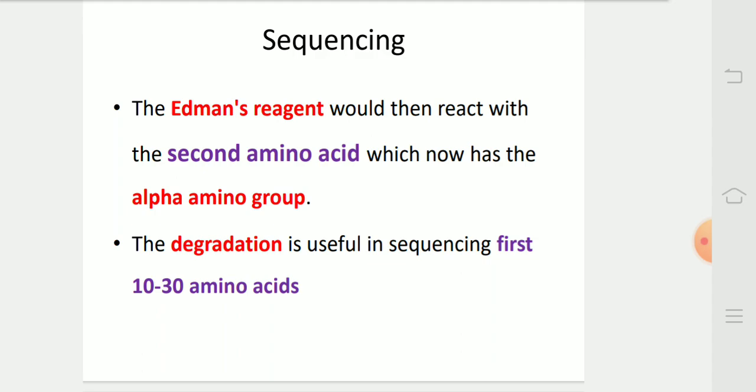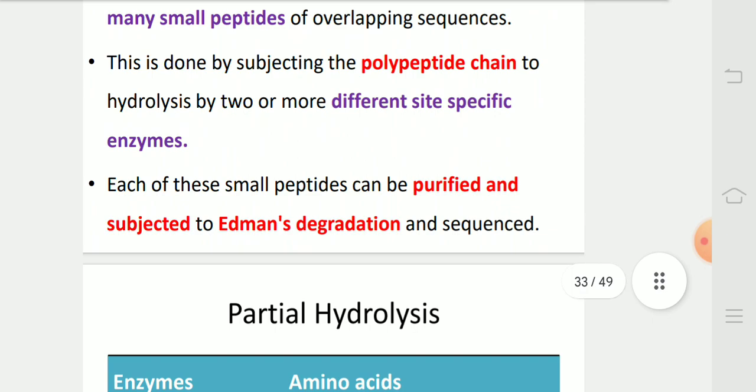The fourth part of the protein analysis is partial hydrolysis. For very long chain proteins, the chain is broken into many small peptides of overlapping sequences. This is done by subjecting the polypeptide chain to hydrolysis by two or more different site-specific enzymes. Each of these small peptides can be identified, purified and subjected to Edman degradation and sequenced.